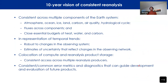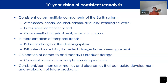With this in mind, the workshop set a 10-year vision for a consistent reanalysis. We deliberately did not use the word 'coupled' because we thought it was a limiting notion. Consistent reanalysis means consistent across multiple components of the Earth system — including atmosphere, ocean, ice, land, carbon, air quality, and hydrological cycles — with consistent fluxes across these components, and closing essential budgets of heat, water, and carbon. These are things we are not doing very well right now.